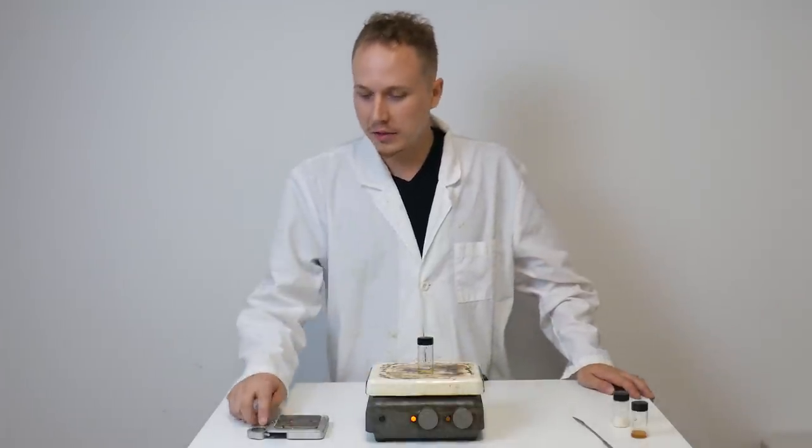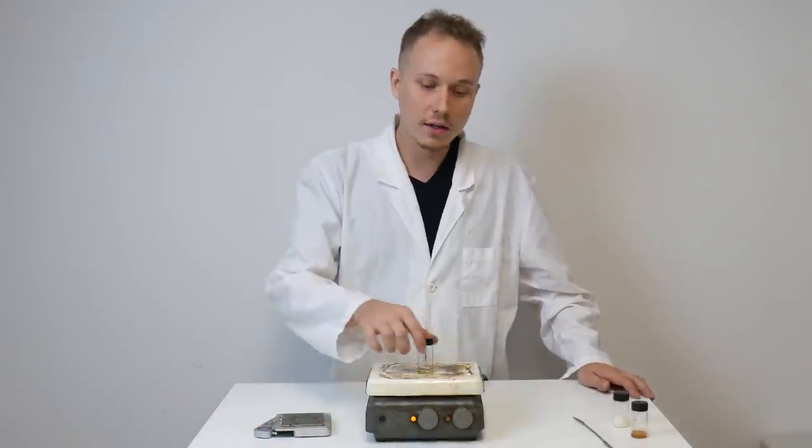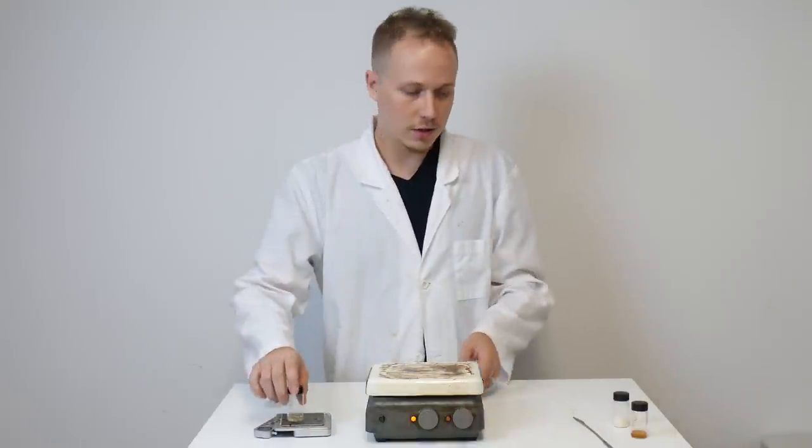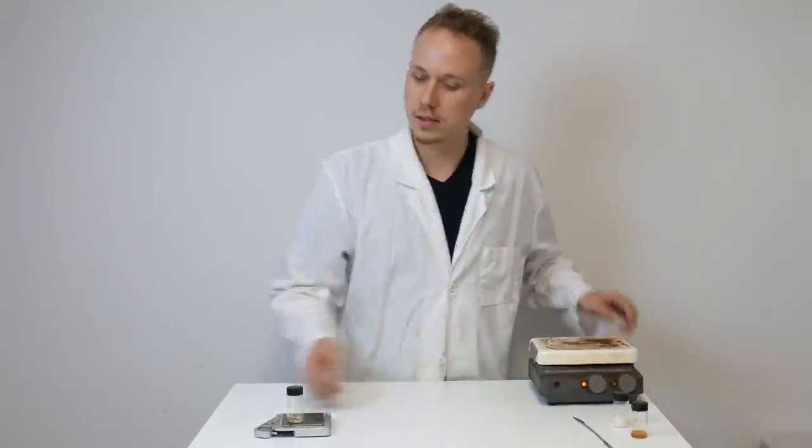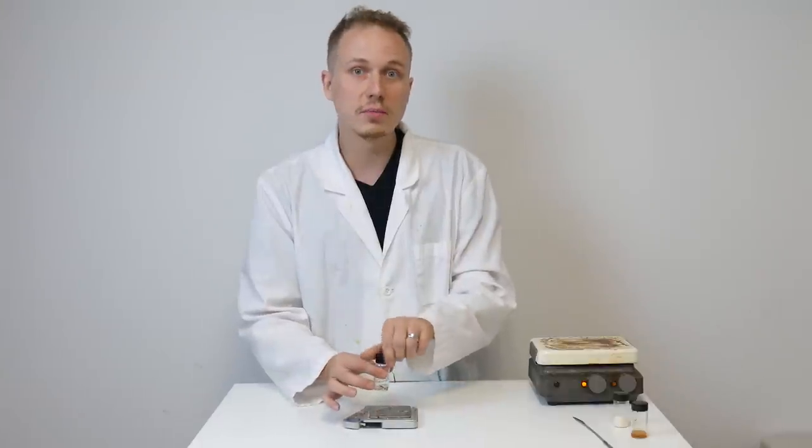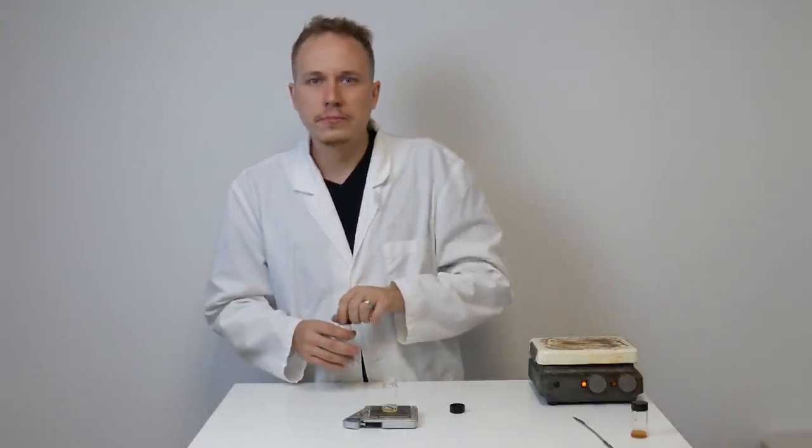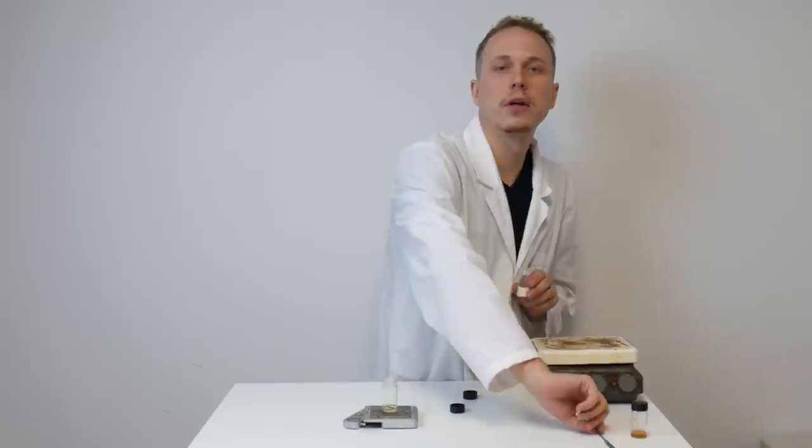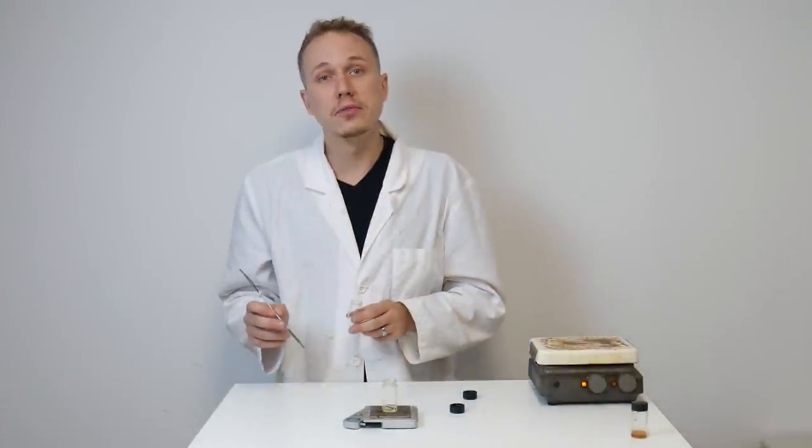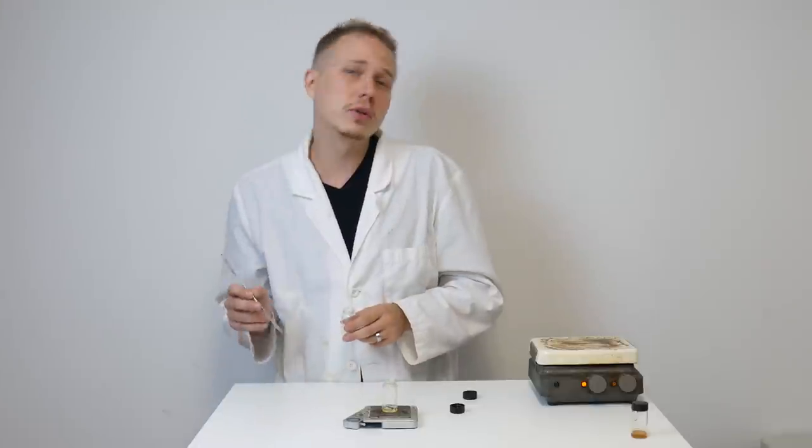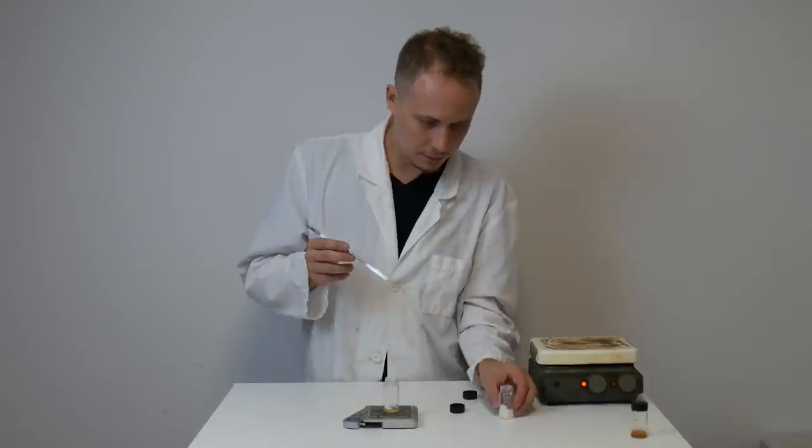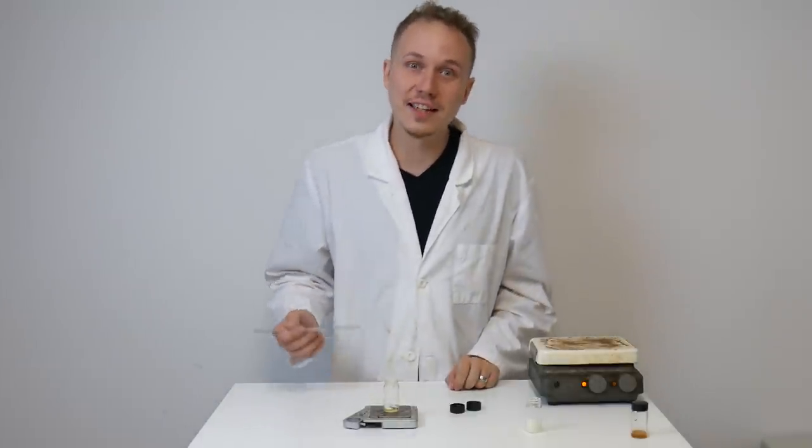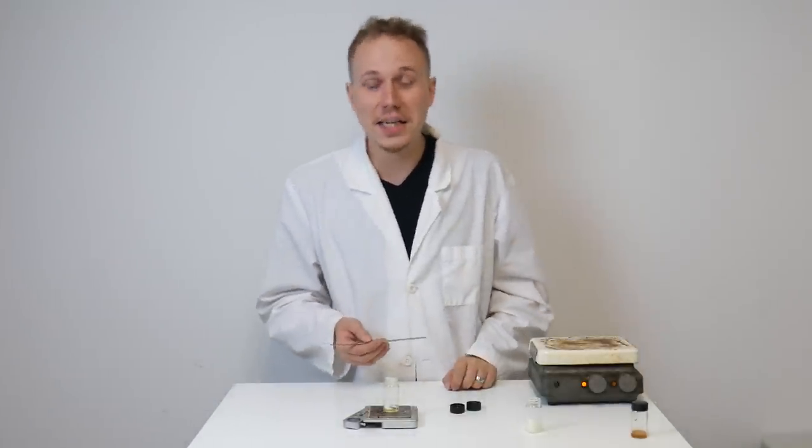After it's done decarbing, I'm going to go ahead and put it back on the scale. Turn the heat way low on the hot plate. And I'm going to add in some THCA. I'm going to do about half as much THCA as I did THC. So there's 0.8 grams of THC in there. And I'm going to do 0.4 grams of THCA. Alright, so there we go. The THCA is added to the THC.